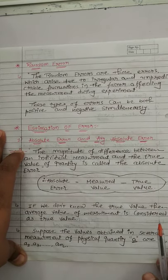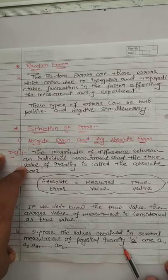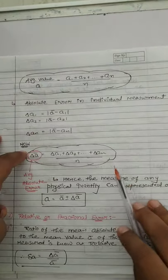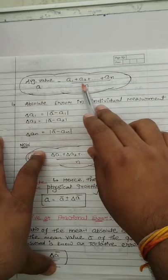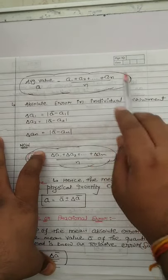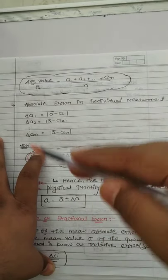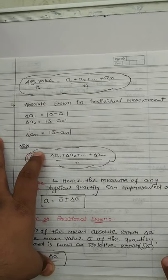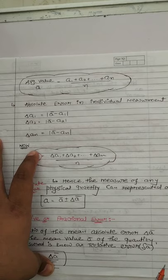If we don't know the true value of the measurement, we consider the average value as the true value. Suppose we have a physical quantity A with different measurements a1, a2, a3, up to an. The average value is obtained by adding all measurements — a1 plus a2 up to an, divided by n. For 10 measurements: a1 plus a2 plus up to a10 divided by 10. The absolute error in an individual measurement is: delta A1 equals mod of (A-bar minus A1), using the modulus because the difference can be positive or negative, but we need only the magnitude.